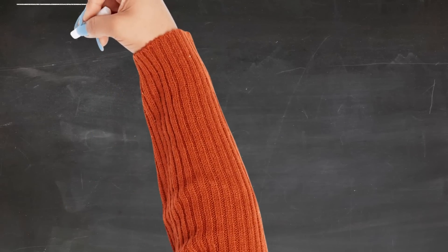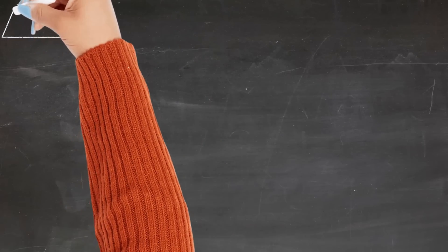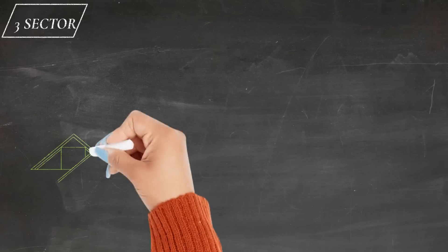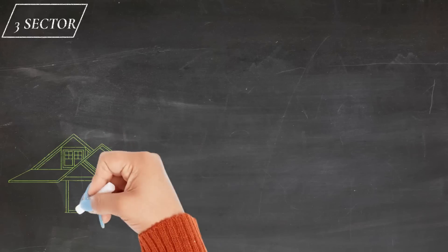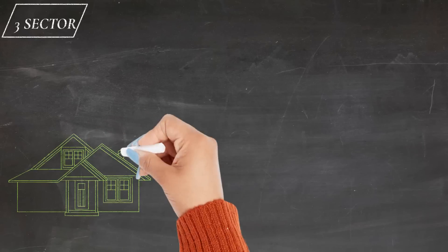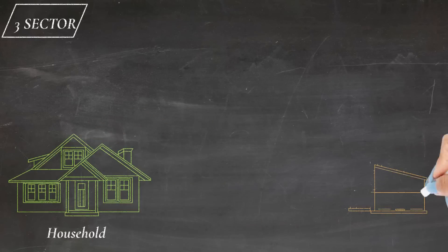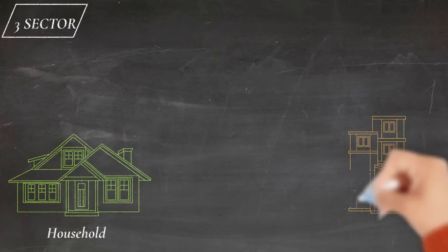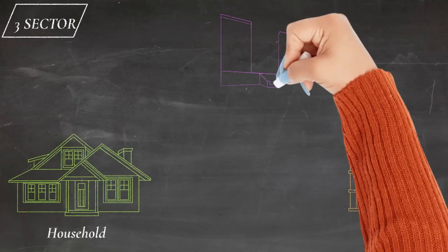We will start by understanding how economic activities are organized when there exists only three sectors, that is the household, the industry, and the government. This is called the three-sector model.